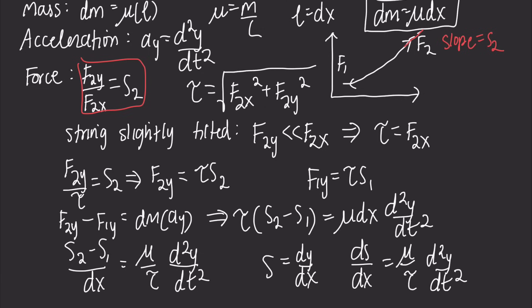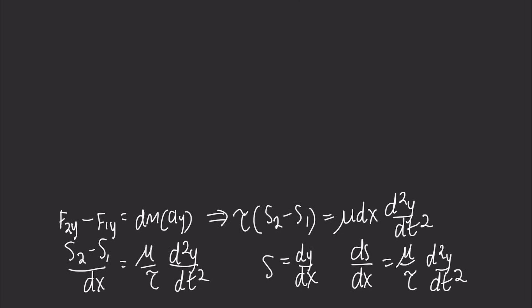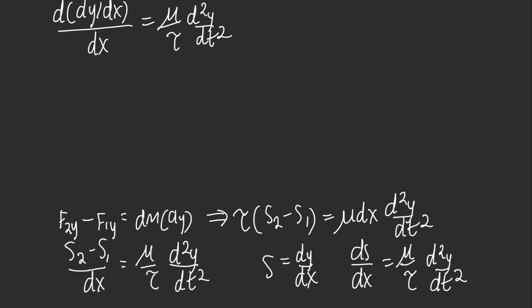We know that slope s equals dy/dx, so substituting that in: d(dy/dx)/dx on the left side equals (μ/τ)·d²y/dt² on the right side. We haven't changed the right-hand side at all.